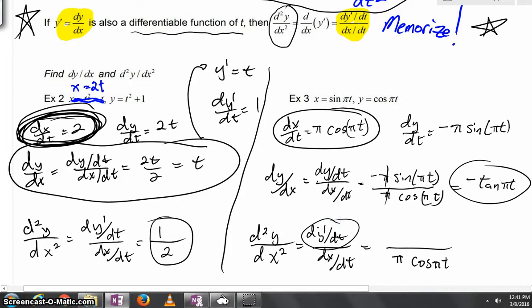But taking the derivative of y prime, well, y prime is right here. So the question is, what's the next derivative of y prime with respect to t? Well, the derivative of tangent is going to be secant squared. But we're going to still have a negative. We're going to have a chain rule come out. And we'll have negative pi secant squared pi t.